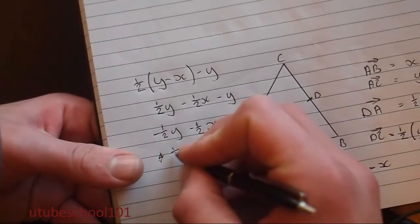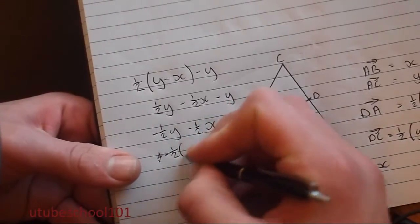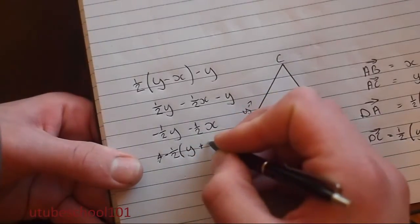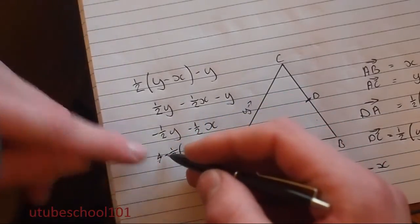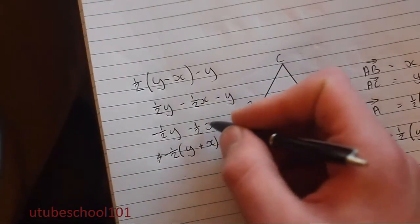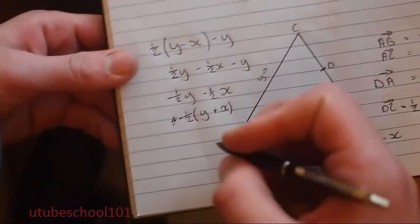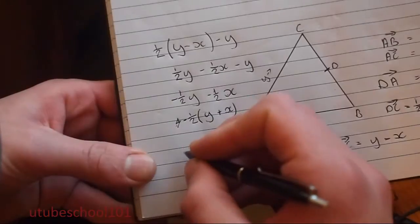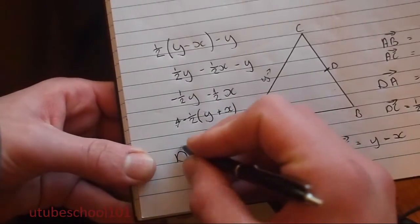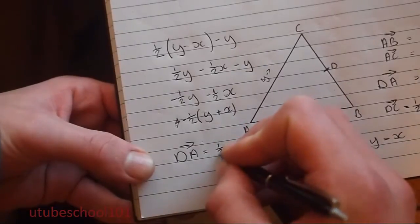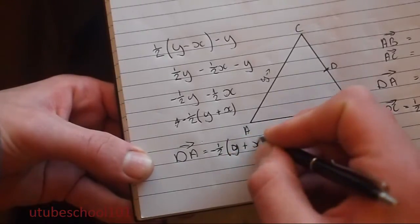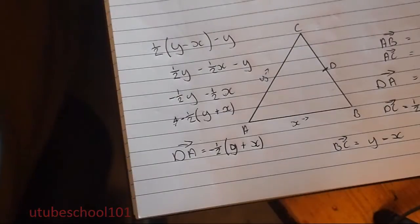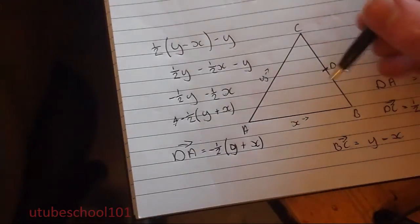And you can simplify this even further. It's minus half multiplied by Y plus X. Because we're multiplying it by negative, it will make it negative as we have in that expression here. So a final answer for the question is, D to A is equal to minus half multiplied by Y plus X.